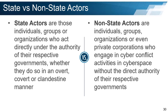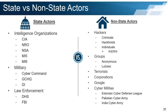State actors are individuals, groups, or organizations who act directly under the authority of their respective governments, whether they do so in an overt, covert, or clandestine manner — these actors are acting under orders from their governments, whether publicly attributable or not. Non-state actors are individuals, groups, organizations, or even private corporations who engage in cyber conflict activities without the direct authority of their respective governments. Examples of state actors include intelligence organizations such as the CIA, NSA, or MI5, military organizations such as U.S. Cyber Command and GCHQ, and law enforcement such as DHS or the FBI. Non-state actors can include hackers, individuals such as The Gesture, groups such as Anonymous or Lulzsec, terrorists, corporations, and even cyber militias.